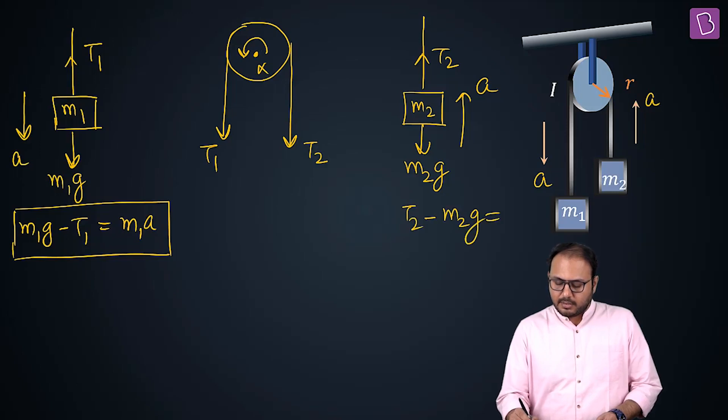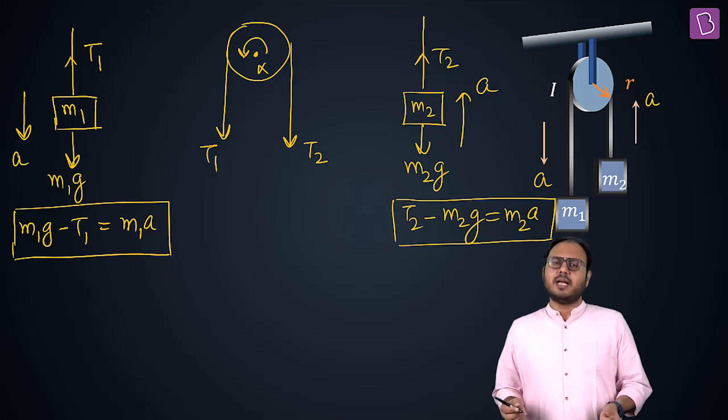Okay, T2 minus M2G is equal to M2A. How is this for an equation? Oh, that's absolutely simple, sir. F equal to MA on both the blocks. Correct.